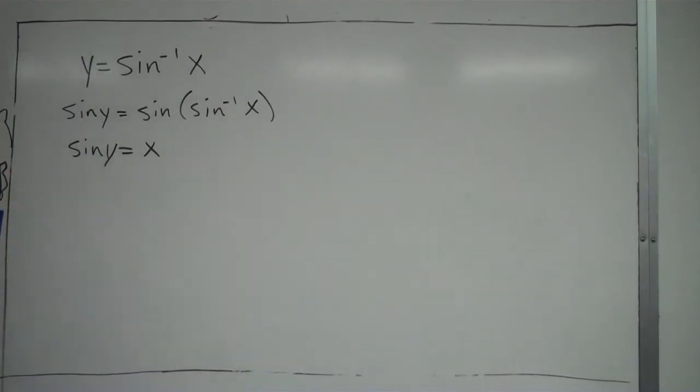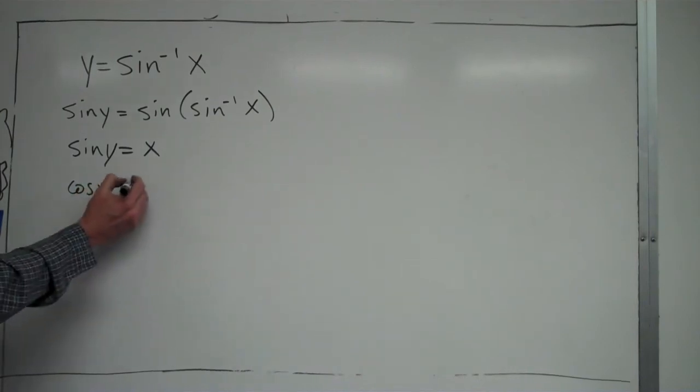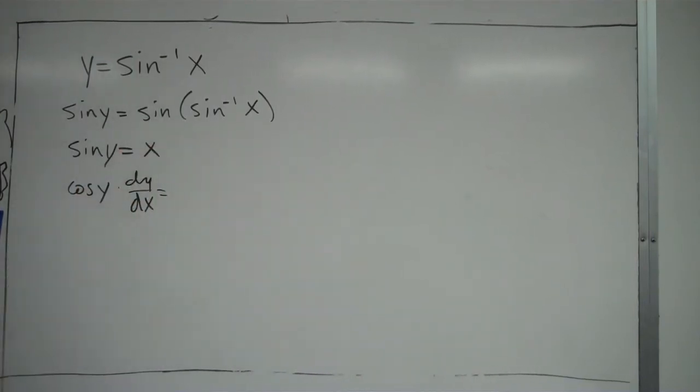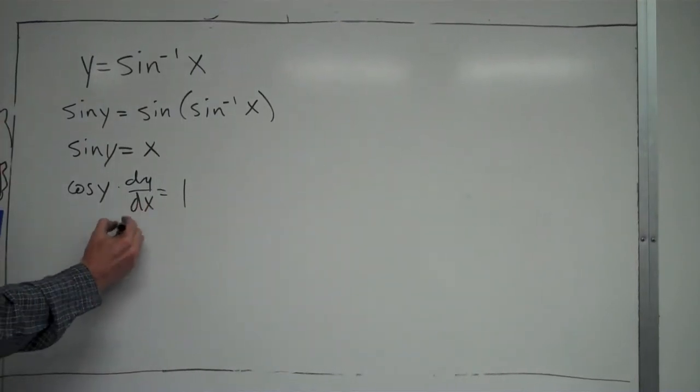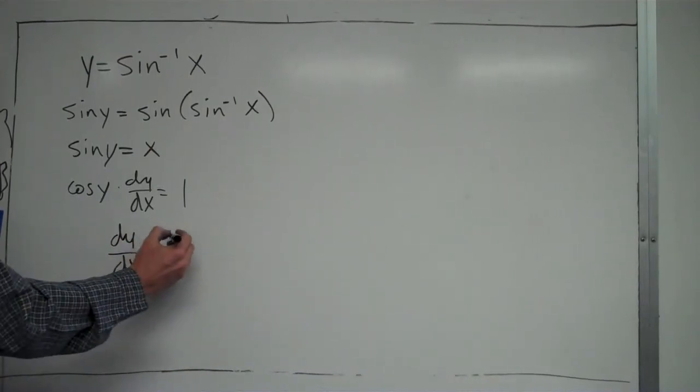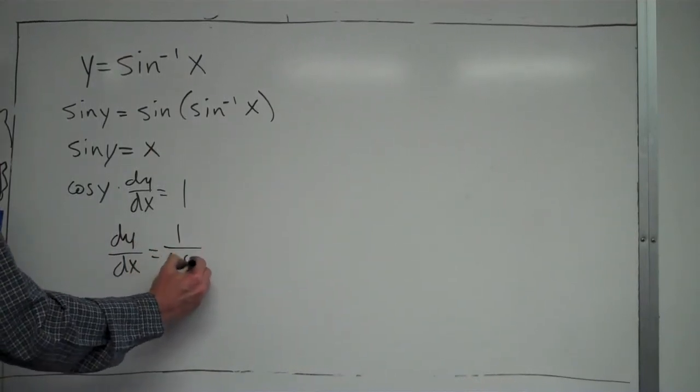So what I do? First thing, take the derivative of sine of y. Well, the derivative of sine of y is just cosine of y. Since I'm using implicit differentiation, since I took the derivative of y, I'll multiply it times dy/dx, equals the derivative of x is just 1. Now my goal is to find the derivative of this, dy/dx. So I'm going to divide, and I get dy/dx equals 1 over cosine of y.